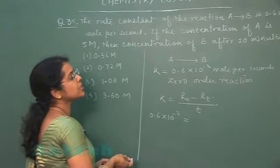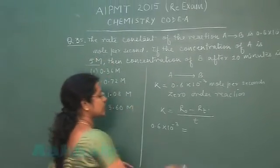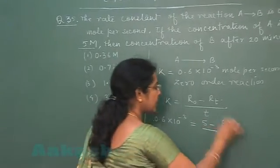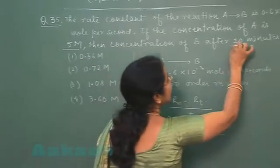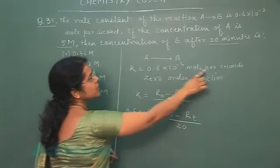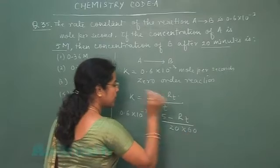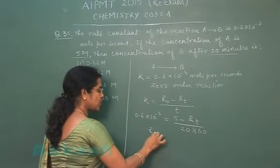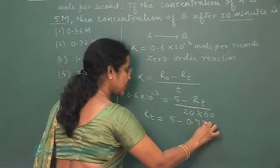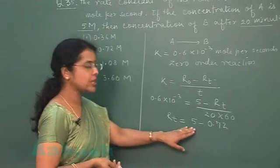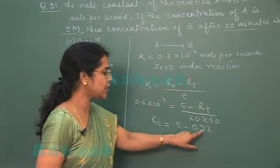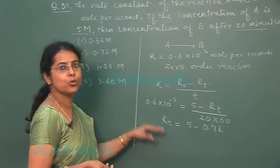K is equal to R0 minus Rt upon time period. Now in this question rate constant is given 0.6 into 10 raise to power minus 3. R0 that is initial concentration of reactant which is given 5 M. This is Rt amount of reactant left divided by the time period. Here the time is given 20 minutes. But in rate constant this is per second. So this is converted into seconds. We can solve this question. This Rt is equal to 5 minus 0.72. So 5 is the initial concentration. Amount of reactant A which is consumed in the reaction in 20 minutes is 0.72 moles.